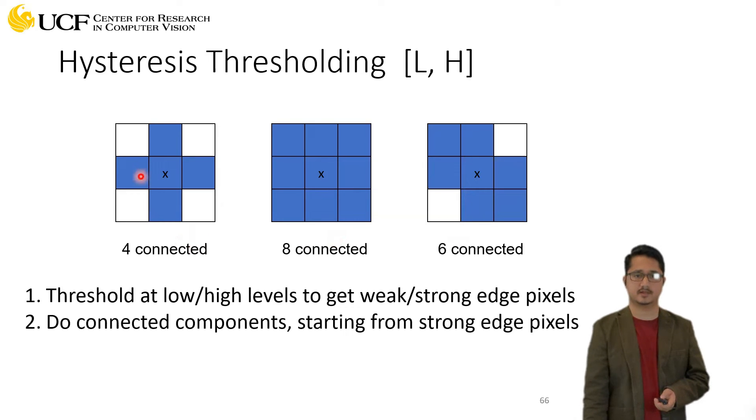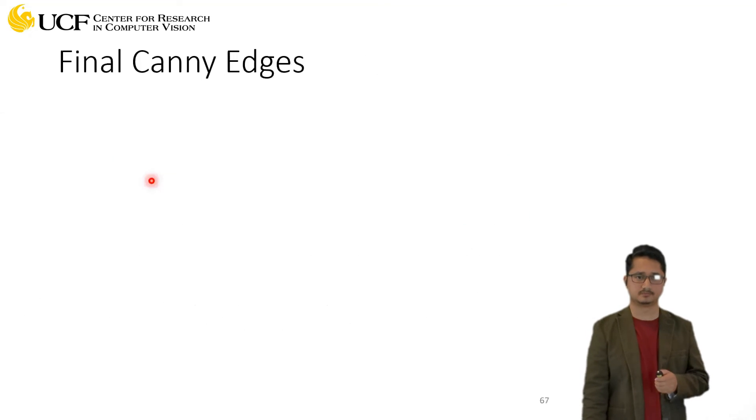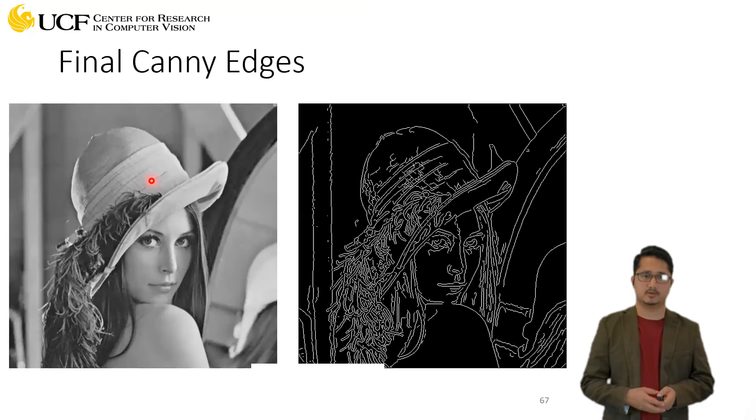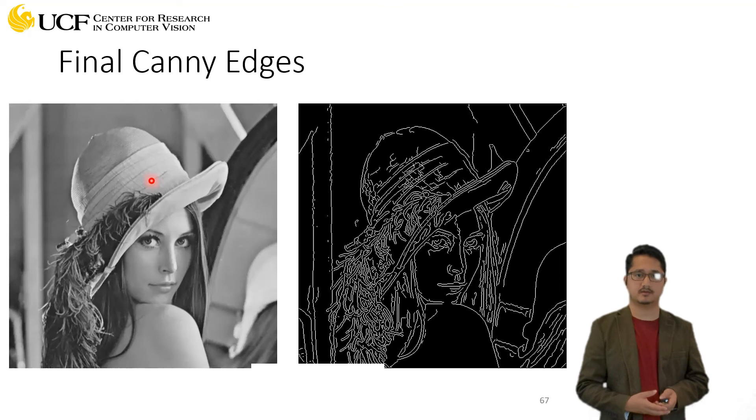If you have this pixel with some magnitude and this pixel with some magnitude, and if these are neighboring pixels, they belong to the same connected component. So if you use hysteresis thresholding on top of non-maximum suppression...